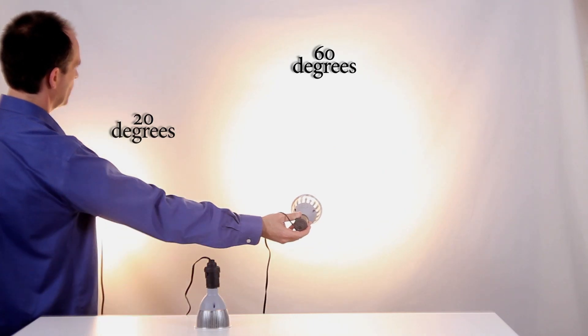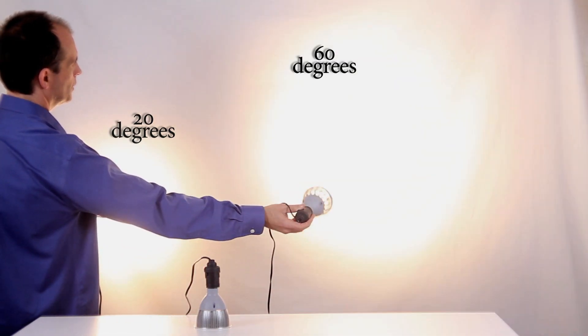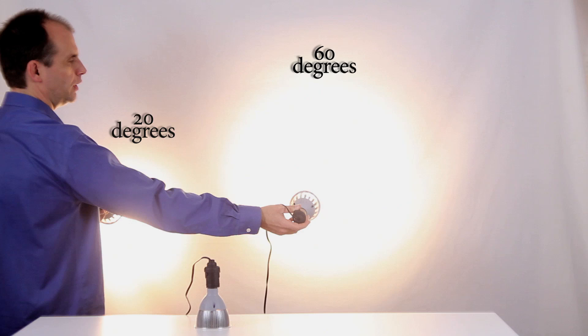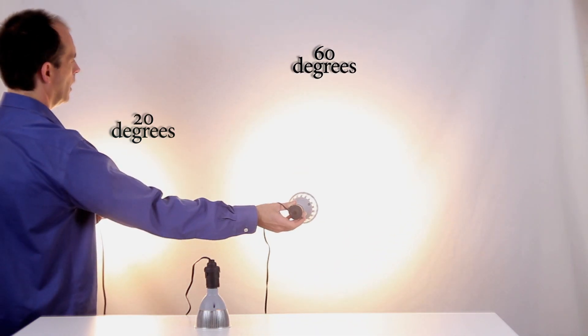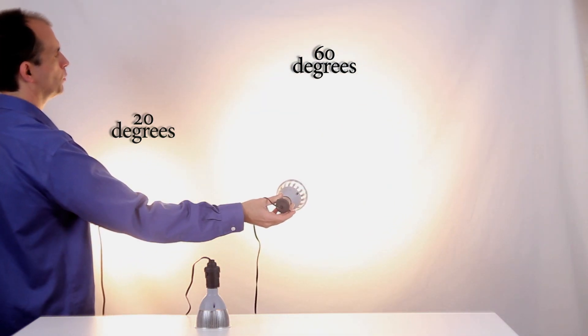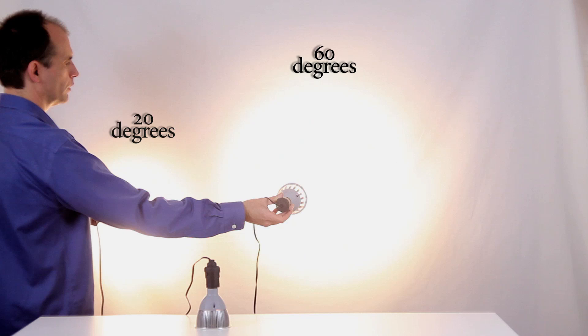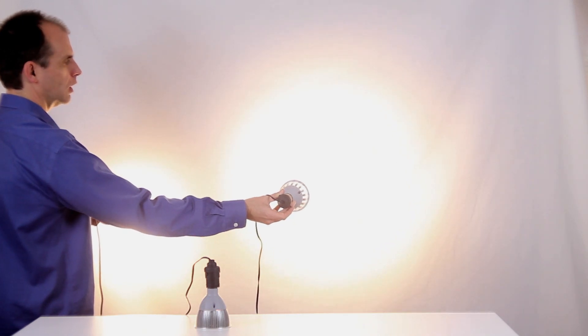So you can see 20 degree is very focused, 60 degree is very wide. I'm only maybe about 2 feet away from this surface, so obviously the light is going to spread that much more when you get further away. And let's look at that on a painting just now.